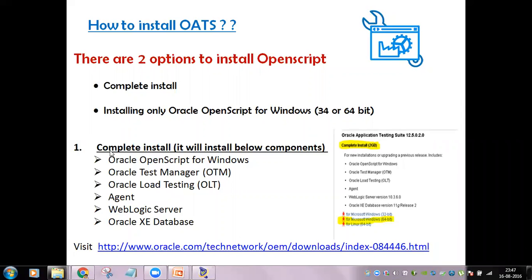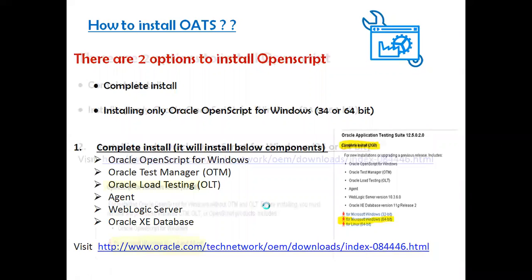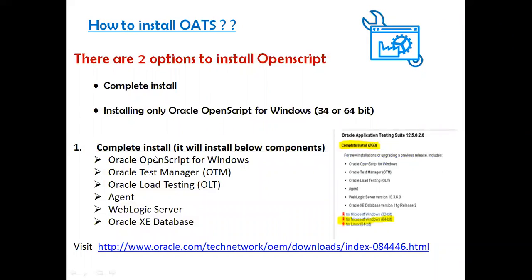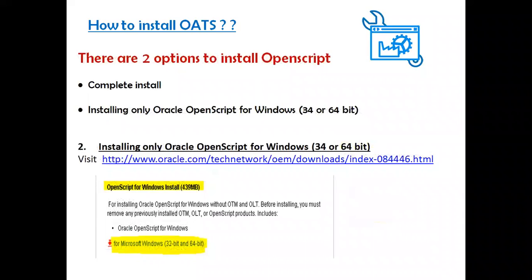The complete install can be downloaded using a specific link. If you want the entire Oracle Application Testing Suite, which consists of integrated products like Oracle OpenScript, Test Manager, Load Testing, and a database, you install the complete option. If you are only interested in Oracle OpenScript, you can install the standalone version, which is a 439 MB file, and you will only get OpenScript — not Test Manager or Load Testing.